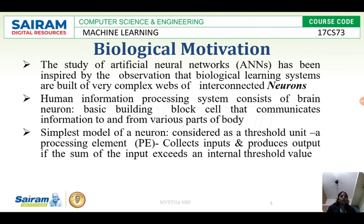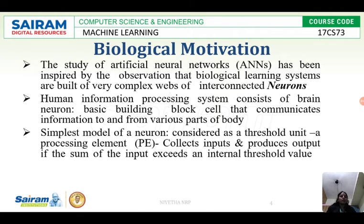What is the motivation behind artificial neural networks? It is the biological neural network that motivated the emergence of ANN. When the thinking capacity of humans is analyzed, we can implement the same thing in a machine. Humans think with the help of the brain. The brain carries out these activities, and we have billions and trillions of neurons in our brain that work collaboratively to produce an output.